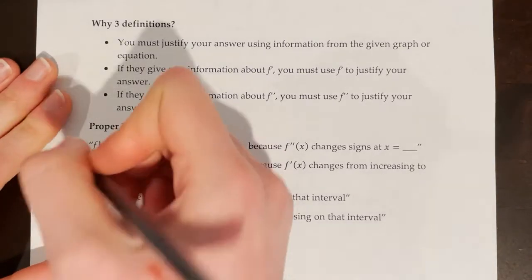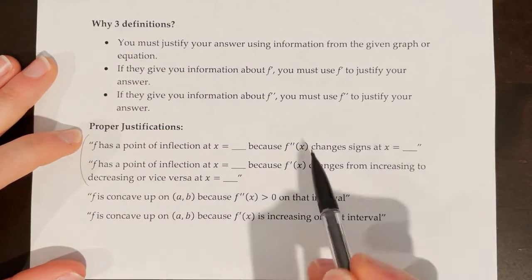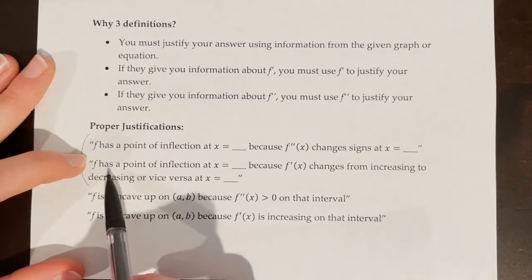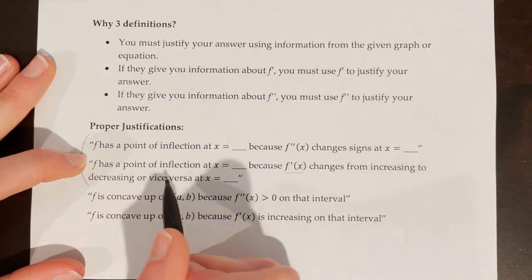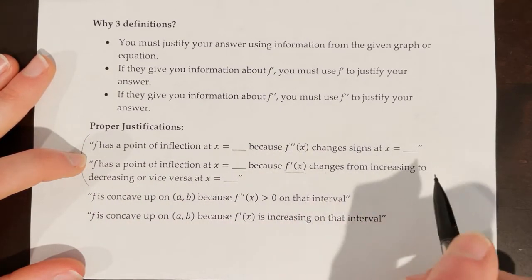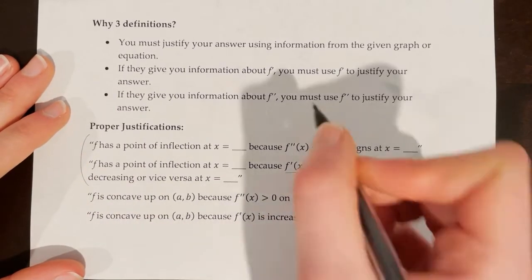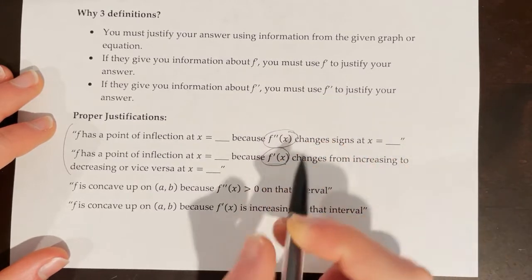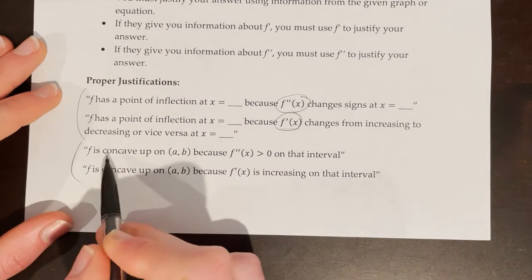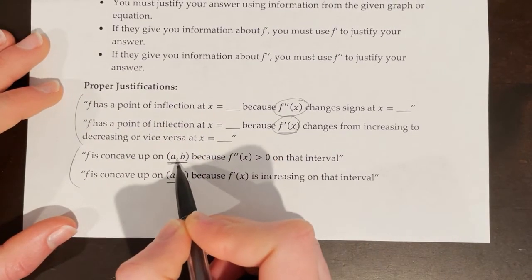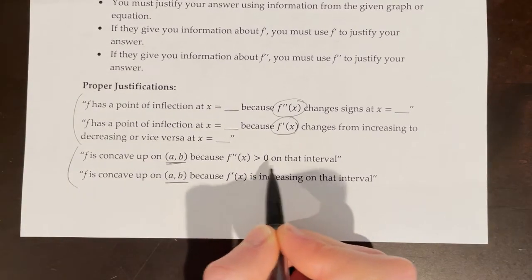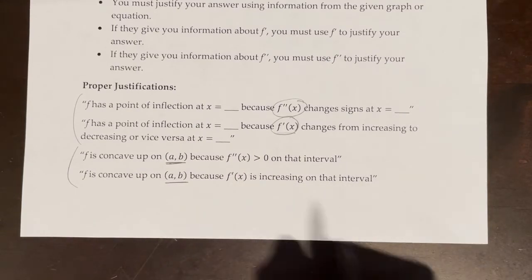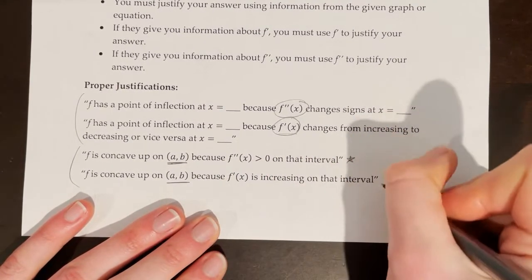Here are some proper justifications. If given information about f'', say: f has a point of inflection at x equals blank because f'' changes signs at x equals blank. If given information about f', say: f has a point of inflection at x equals blank because f' changes from increasing to decreasing, or vice versa, at x equals blank. For concavity: f is concave up on the open interval from a to b because f'' of x is greater than zero — or because f' of x is increasing — on that interval, depending on what you are given.